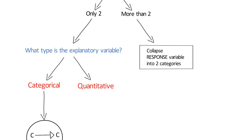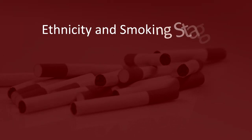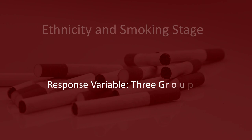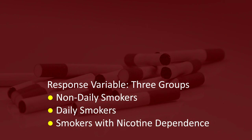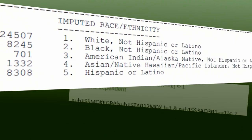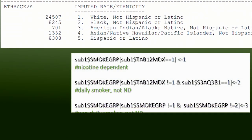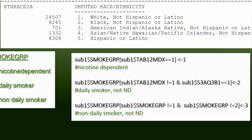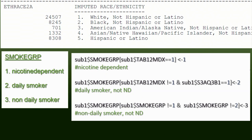So let's modify the research question to look at the association between ethnicity and smoking stage. We'll create a response variable that categorizes young adult smokers into three groups: non-daily smokers, daily smokers, and those with nicotine dependence. These are the ethnic groups recorded in the NISAR codebook, as well as the syntax we can use to create a three-category smoking stage variable. We create the new secondary variable, smoke group, inside our dataset and assign it the appropriate value based on an individual's values on another variable. We make it into a factor because the values 1, 2, and 3 are dummy codes for this categorical variable.